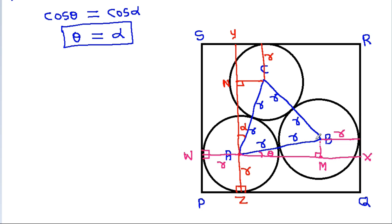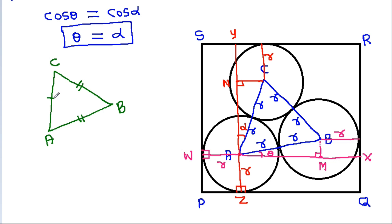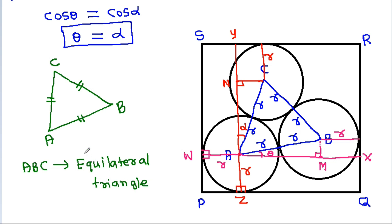In triangle ABC, AB = BC = CA = 1, so triangle ABC is an equilateral triangle. Therefore all angles will be 60 degrees.